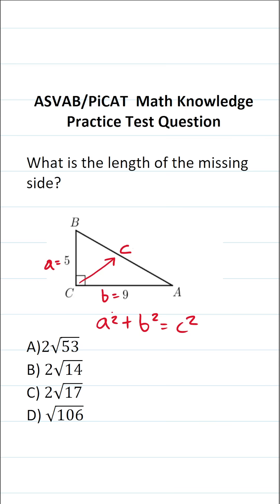Again, let's go ahead and plug these values in and start solving. This becomes five squared plus nine squared equals c squared. Five squared is five times five, which is 25. Nine squared is nine times nine, which is 81 equals c squared.